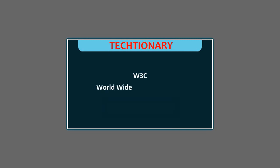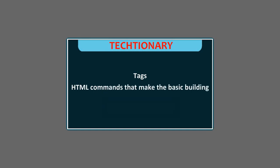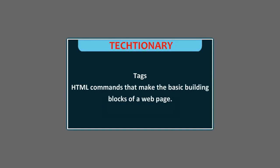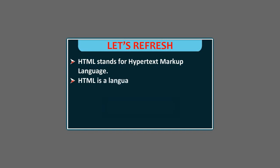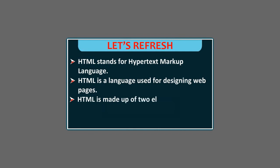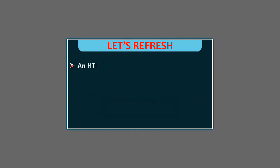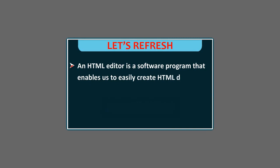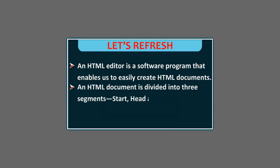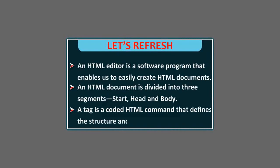Let's refresh: HTML stands for Hypertext Markup Language. HTML is a language used for designing web pages. HTML is made up of two elements — tags and attributes. An HTML editor is a software program that enables us to easily create HTML documents. An HTML document is divided into three segments: start, head, and body. A tag is a coded HTML command that defines the structure and appearance of a web page. A web browser is a software that lets us view the output of the HTML page.